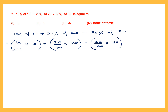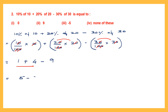Let's simplify each part. Cancelling zeros: 1 into 1 is 1. For the next part, cancel zeros, multiply 2 into 2 — two twos are 4. For the last part, cancel zeros, 3 into 3 — three threes are 9, and that's minus 9. So we have 1 plus 4 is 5, then 5 minus 9. The signs are different, so put the sign of the bigger number and subtract: 9 minus 5 is 4. The answer is minus 4.